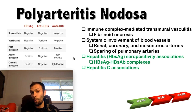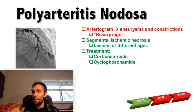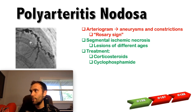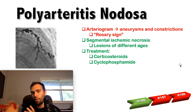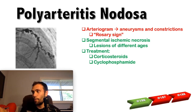Treatment for polyarteritis nodosa is aimed at controlling autoimmune complex formation: corticosteroids to suppress the immune system and cyclophosphamide — these are the two big treatments for Step 1. If the patient has hepatitis B seropositivity, you would want to treat the hepatitis B infection. On a board question, if they give you multisystem symptoms and show an image with aneurysmal dilatations in a blood vessel — the rosary sign — and increased ESR and CRP, think polyarteritis nodosa.